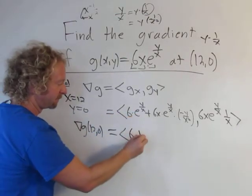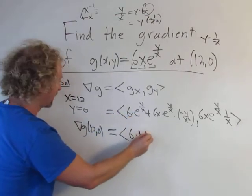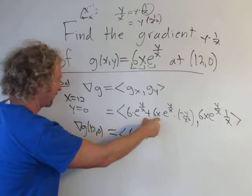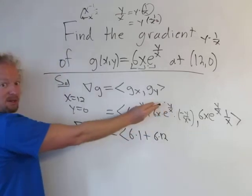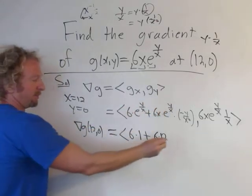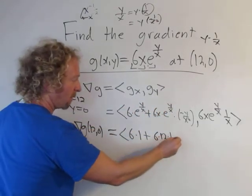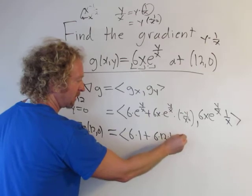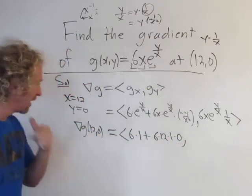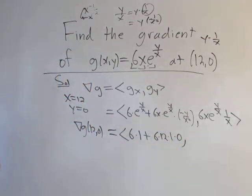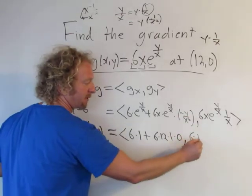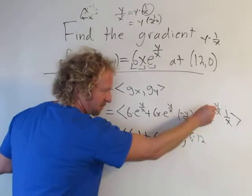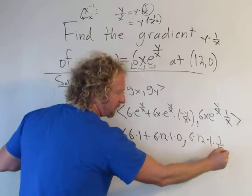Times — y is 0, so e to the 0 is 1, giving 1 — plus 6 times 12 times e to the 0, which is 1, times negative y over x squared. But y is 0 so that whole term goes to 0. Then for the second component: 6 times 12 times e to the 0 — which is 1 — times one over 12.